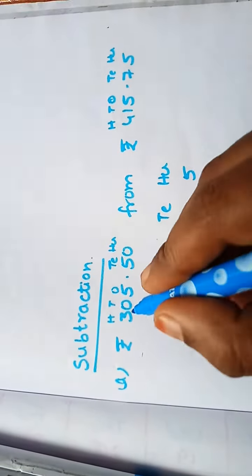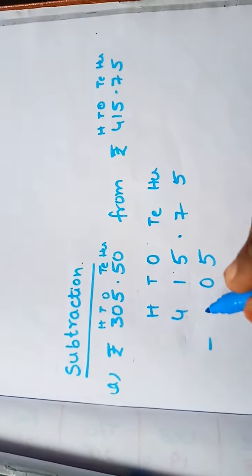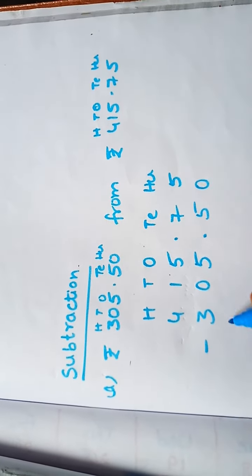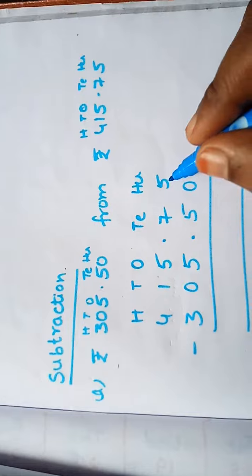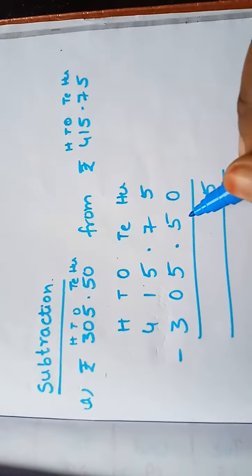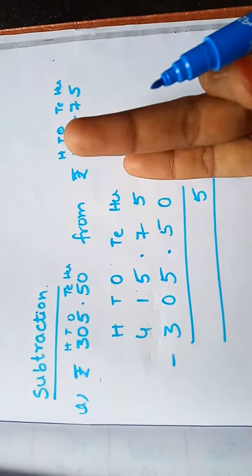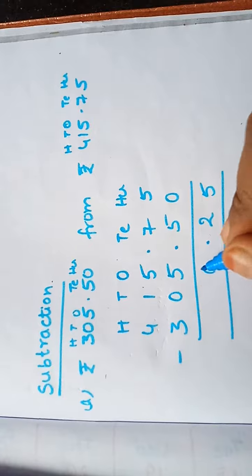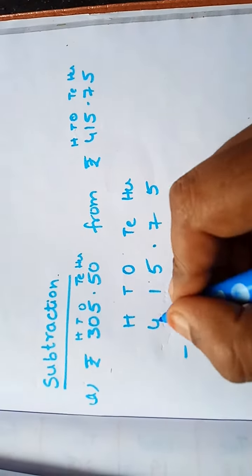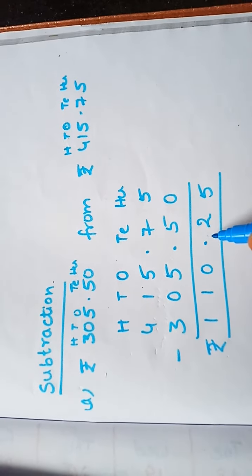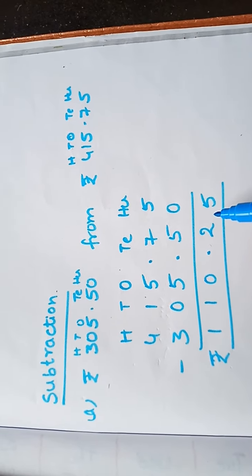Write the second number: ones 5, tens 0, hundreds 1 — so 105. Now subtract: 5 minus 0 is 5; 7 minus 5 — count from 5 to 7, that is 2 — so point 25. Next: 1 minus 0 is 1; 4 minus 3 is 1. So the answer is rupees 110.25.